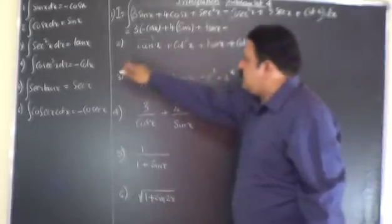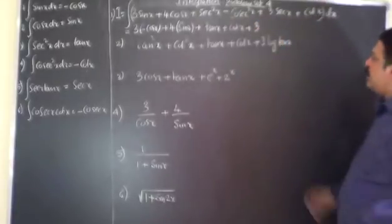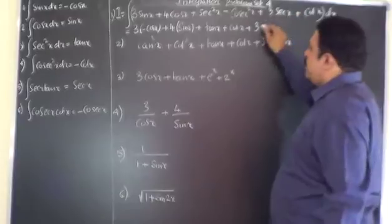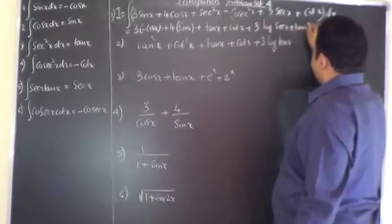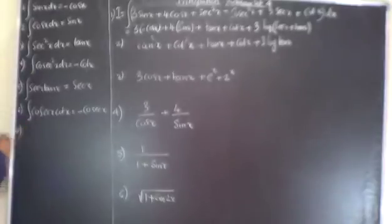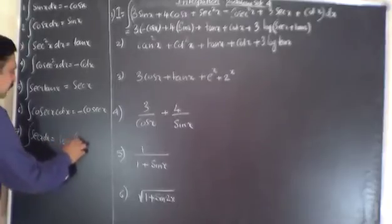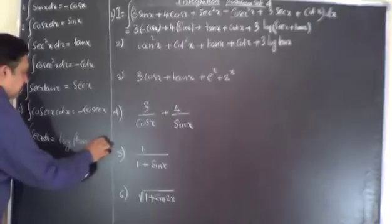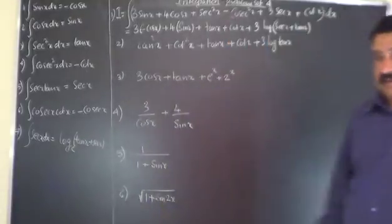Minus integration of cosec² x dx is minus cot x. I already have a minus sign, so minus into minus becomes plus cot x. Plus 3, a constant kept outside, times integration of sec x. If you integrate sec x, you get log of sec x plus tan x. I'll add this to the list — please remember: the integral of sec x dx equals log|tan x + sec x| plus c.